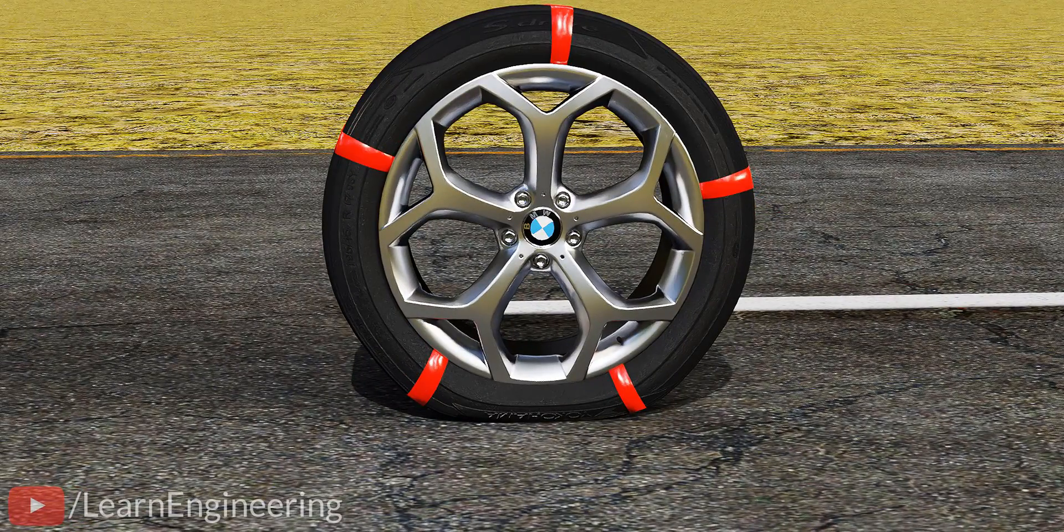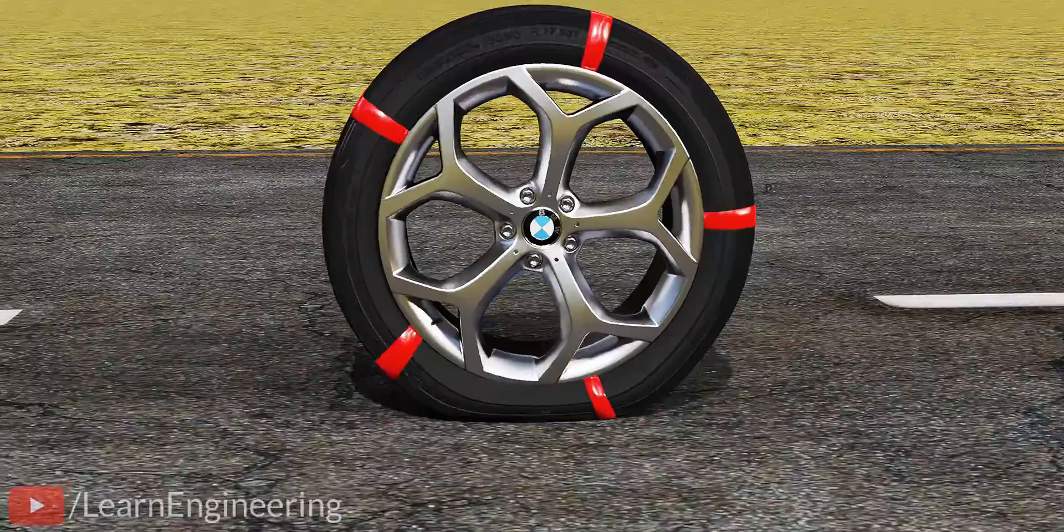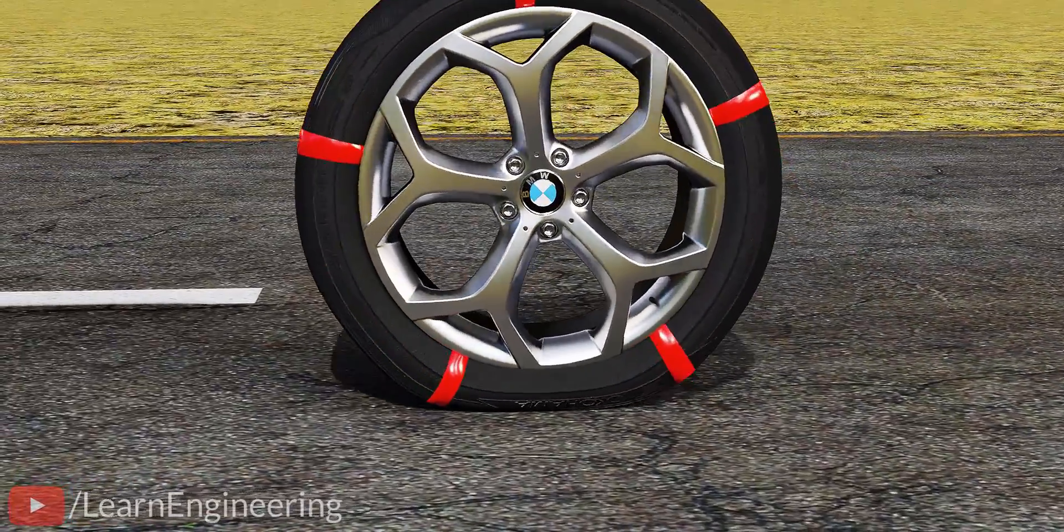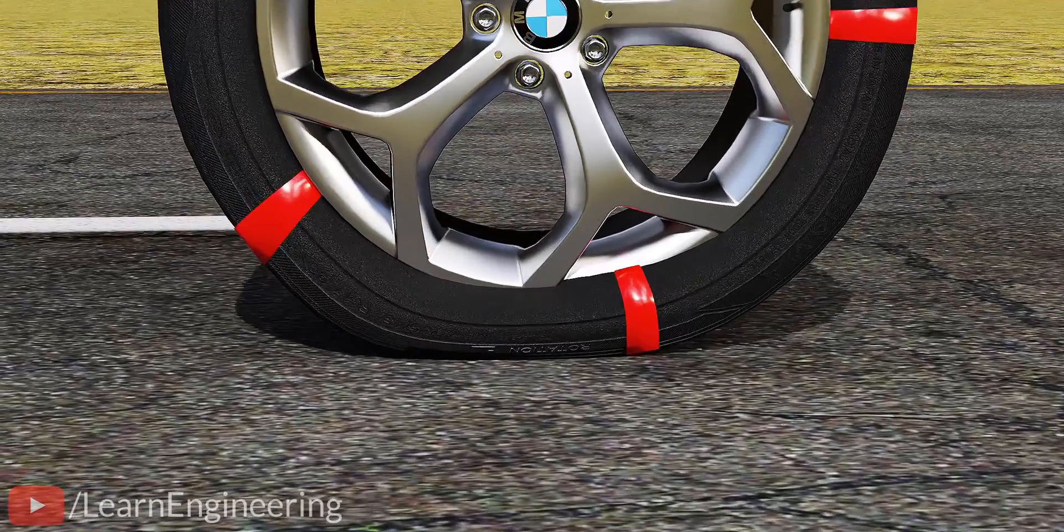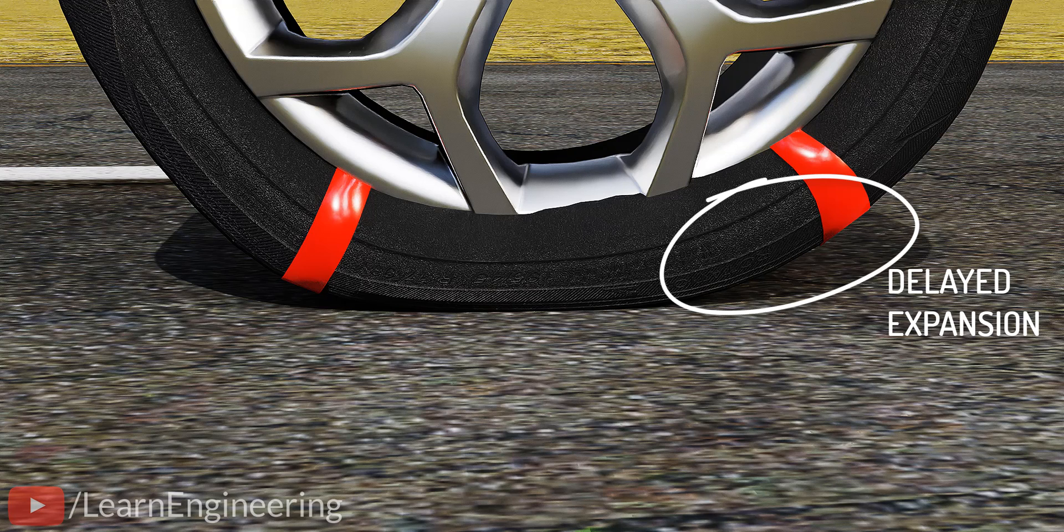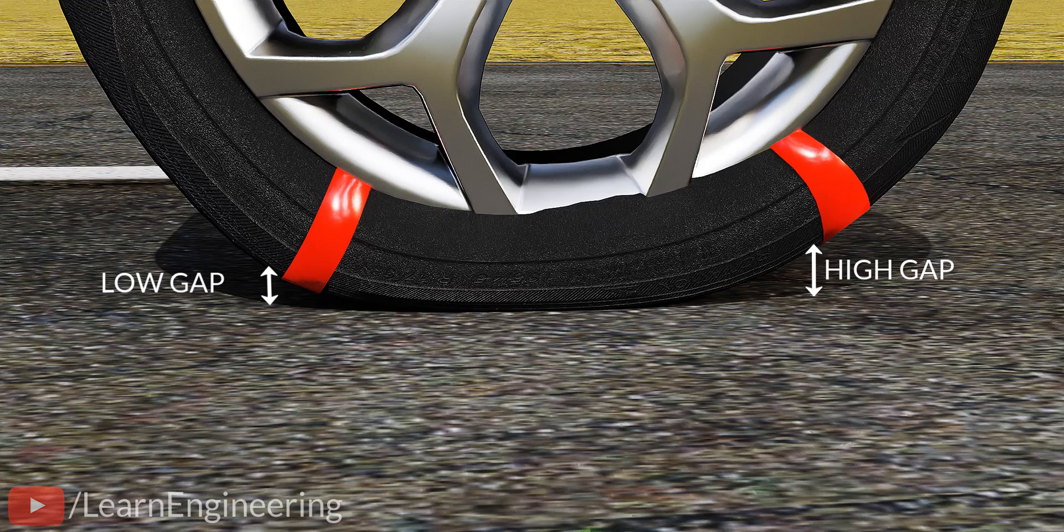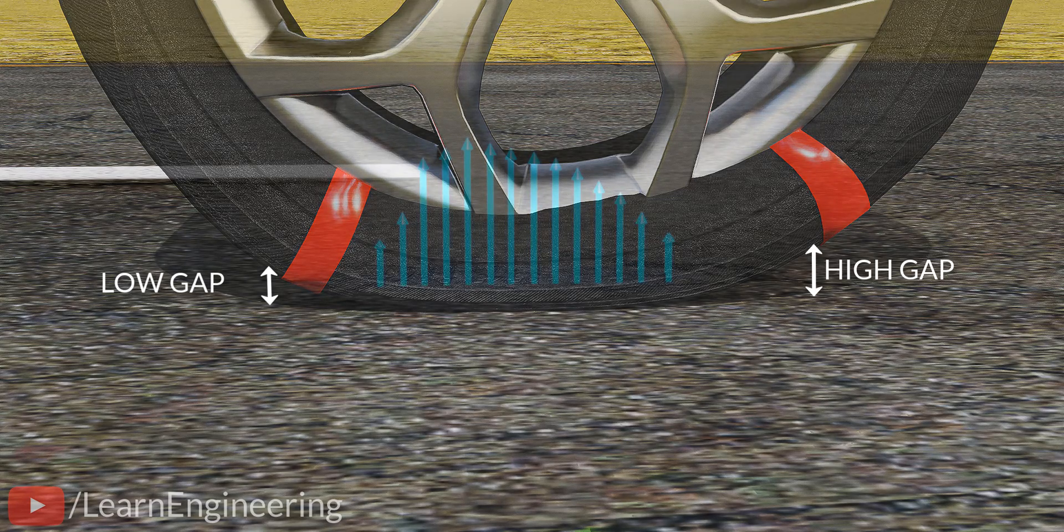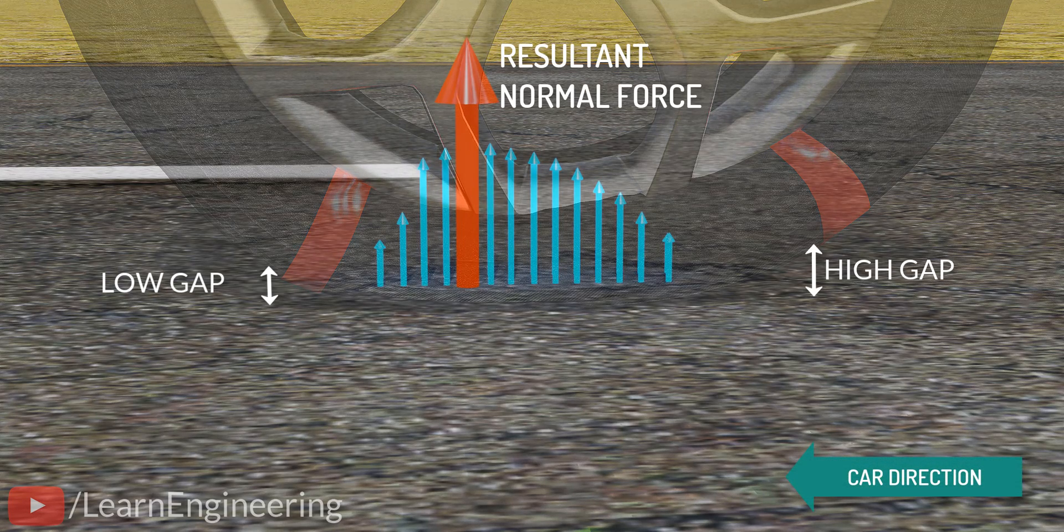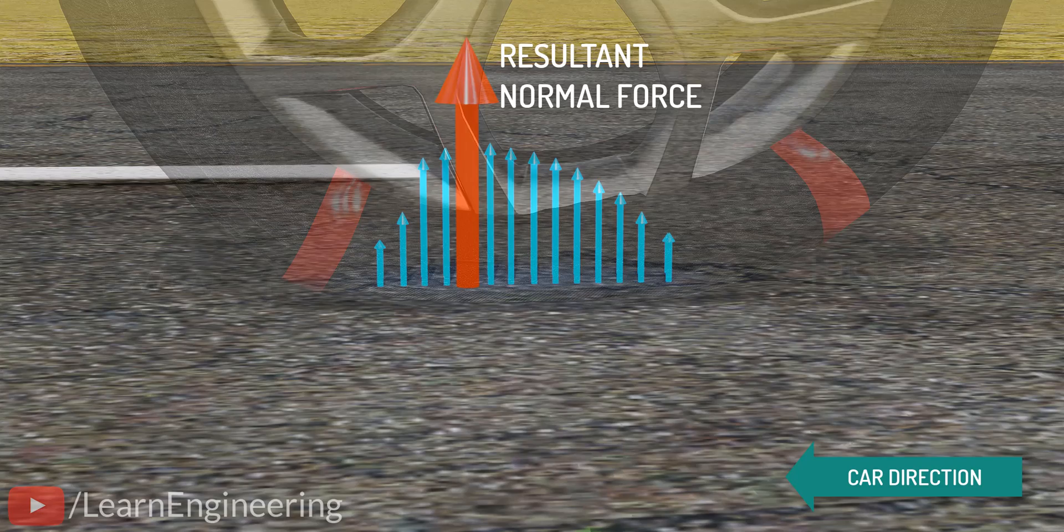The hysteresis nature of rubber results in a few other interesting phenomena as well. We know that during the decompression phase, the material reaches its original length slowly. Due to this, the tire region on the right side does not press against the road with the same vigor as that of the left side. The result is that the right region has a much smaller normal force compared to the left region. This is why load distribution of a rolling tire is always non-uniform, as shown.